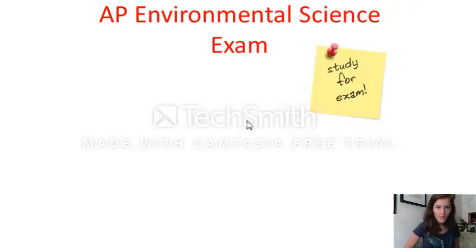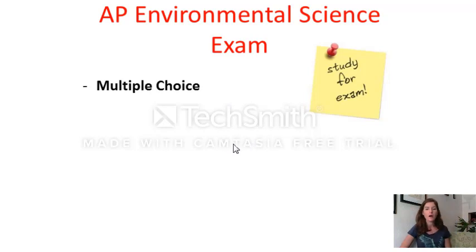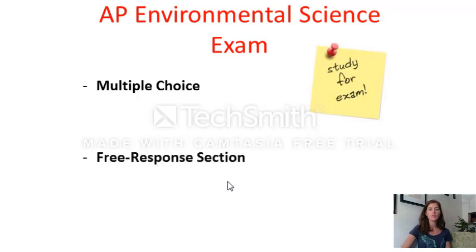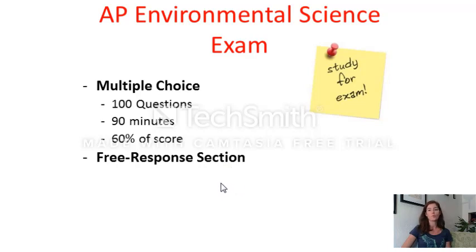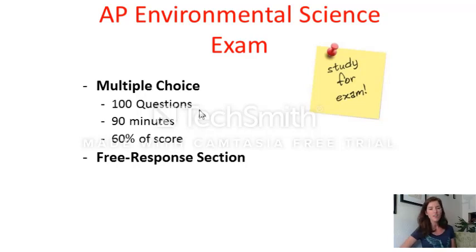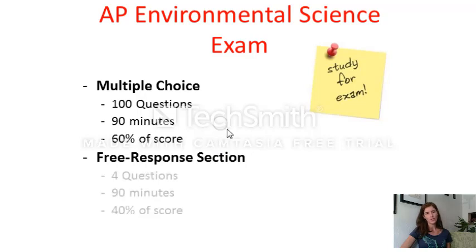The AP Environmental Science exam has two sections: a multiple choice section and a free response section. In the multiple choice part there will be 100 questions — they are critical thinking questions involving a lot of graph analysis, not just memorizing definitions, though there will be a ton of vocabulary throughout this course. You'll be given 90 minutes for the multiple choice part, which accounts for 60 percent of the score.